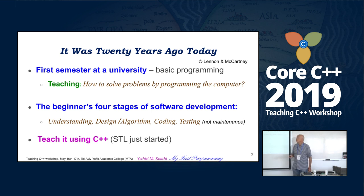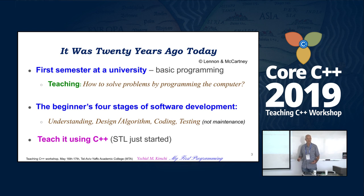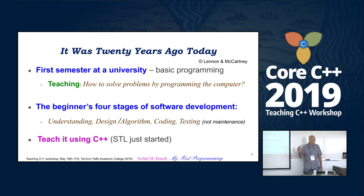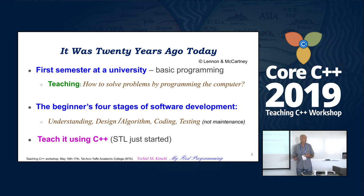What we really teach, both at the Technion and at the University and other places, is teaching how to solve problems by programming the computer. This is the goal. It basically concentrates on four parts of software development: understand the problem, design or algorithms, coding, and testing — no maintenance. But these are the four stages of software development.